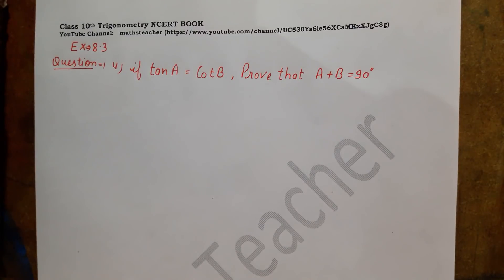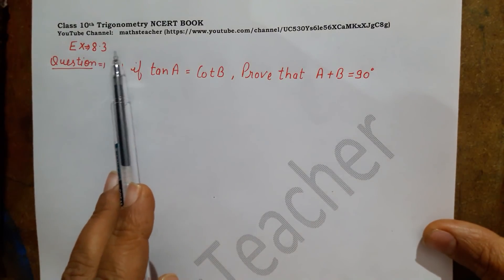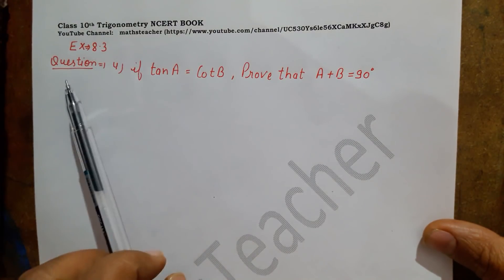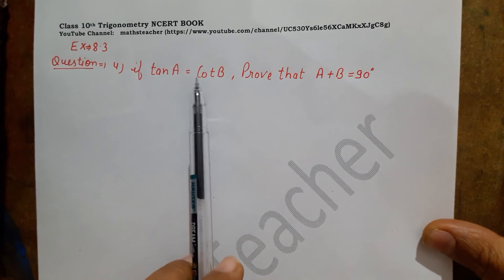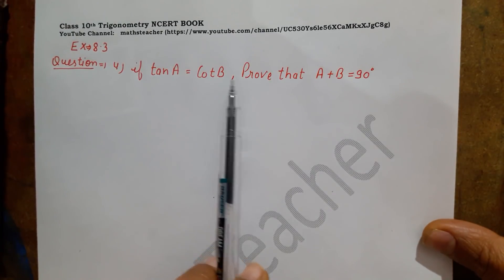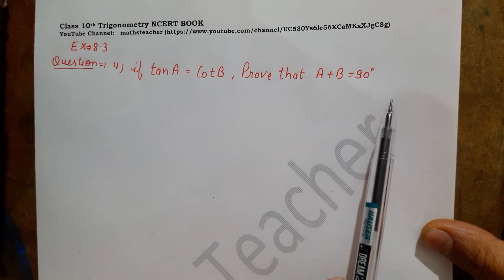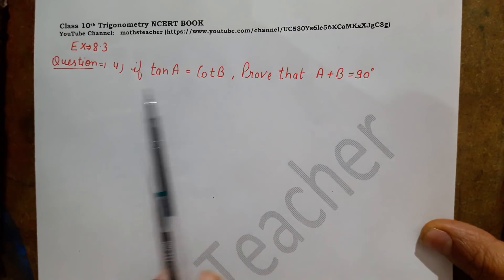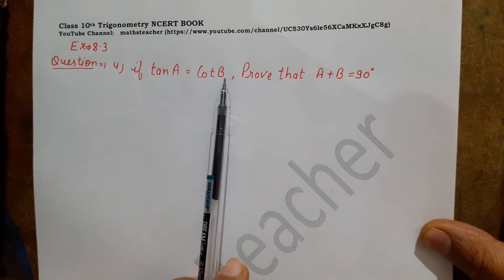Hello viewers, this is Rashmi with another trigonometry question from exercise 8.3, question number 4. If tan A equals cot B, then prove that A plus B equals 90 degrees.